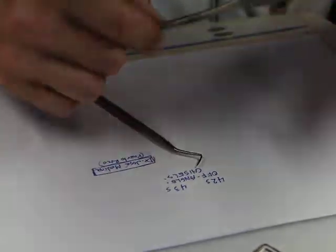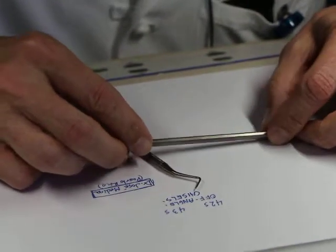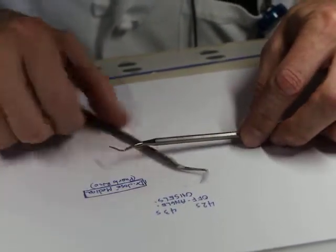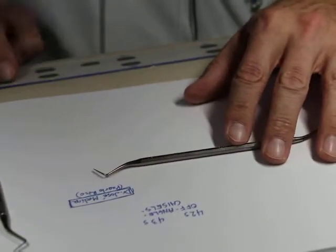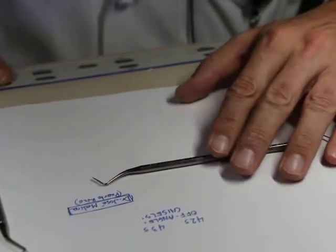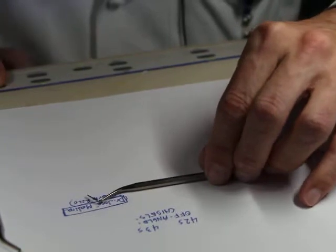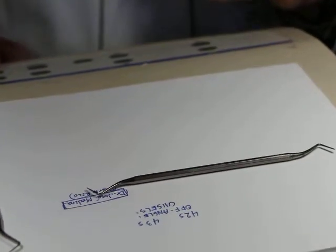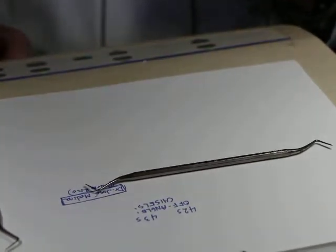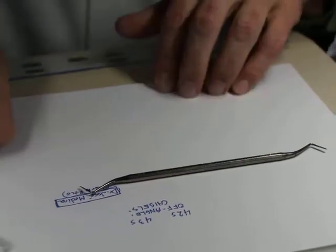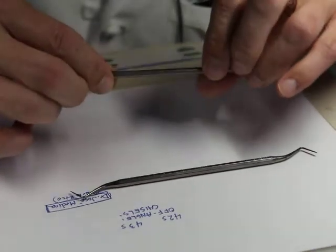Alright. So, if you look at the side of the instrument, it should say Trubow 42S. If you look really closely, hopefully it says something like that. And then the other one says 43S.